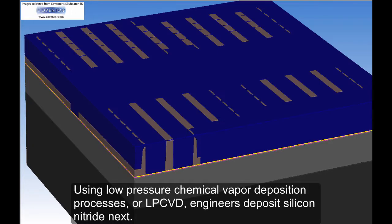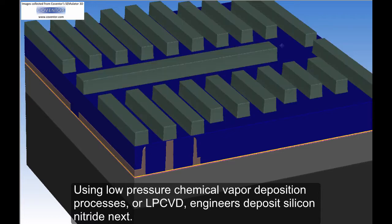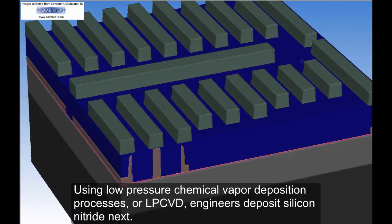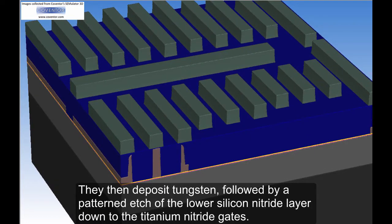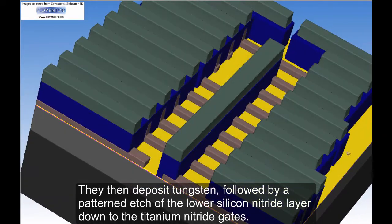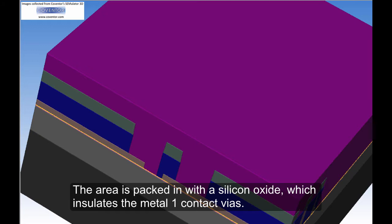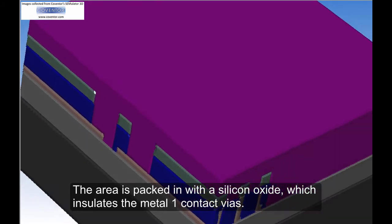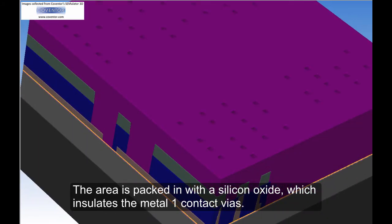Using low-pressure chemical vapor deposition processes, or LPCVD, engineers deposit silicon nitride next. They then deposit tungsten, followed by a patterned etch of the lower silicon nitride layer down to the titanium nitride gates. The area is packed in with a silicon oxide which insulates the metal 1 contact vias.